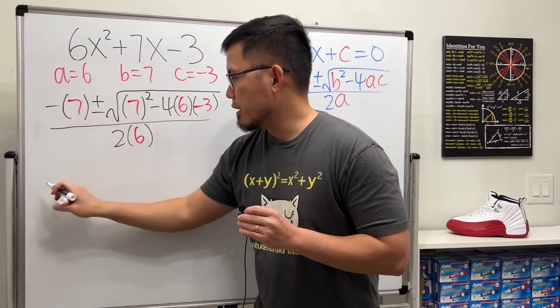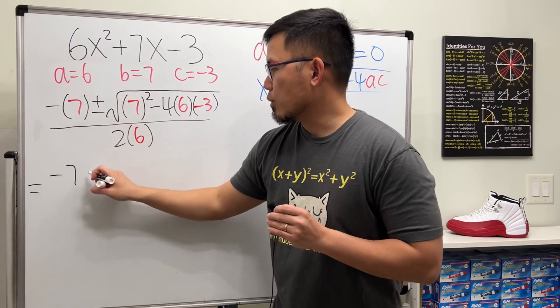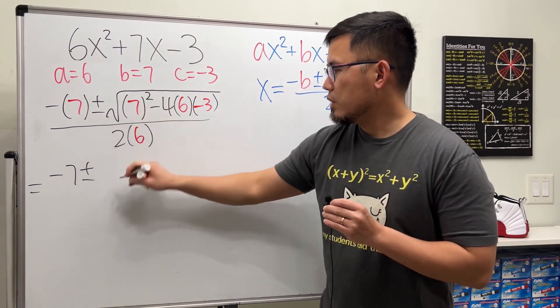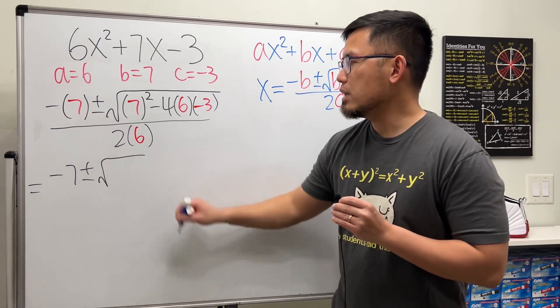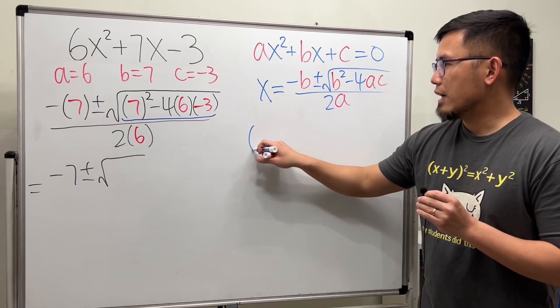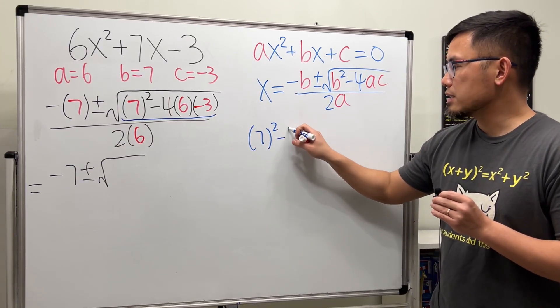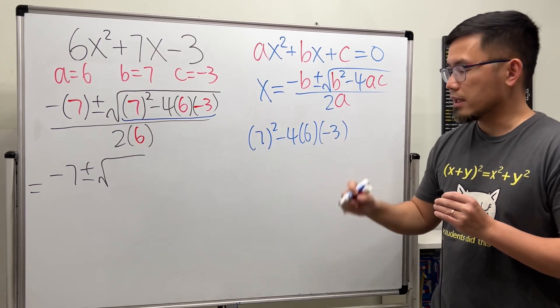Now, this right here equals, let's just work this out, negative 7 plus or minus. And then here we have the square root, but now we will have to work out the inside of the square root right here. So let's go ahead and do it on the side. We have 7 squared minus 4 times 6 minus 3 inside of the parentheses, like this.